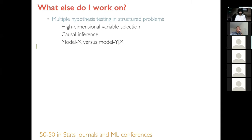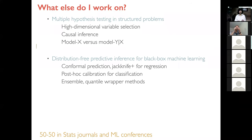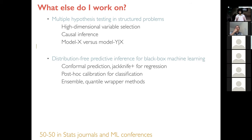An independent theme is distribution-free predictive inference for black box machine learning models. We all like to use deep nets, random forests, and boosting algorithms — the question is how do we give inferential guarantees without making distributional assumptions. There's an area called conformal prediction with ideas for regression, calibration methods for classification, and ensemble techniques as wrappers to provide inferential guarantees.